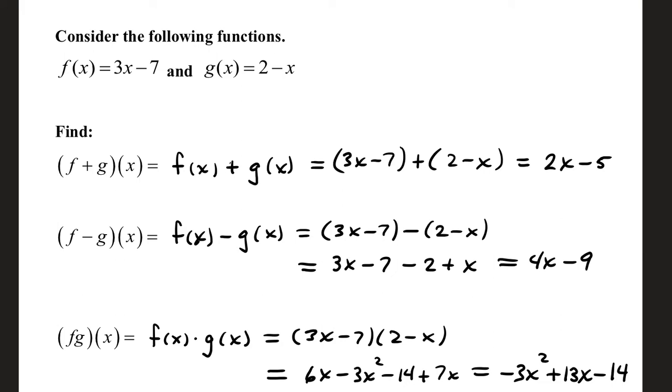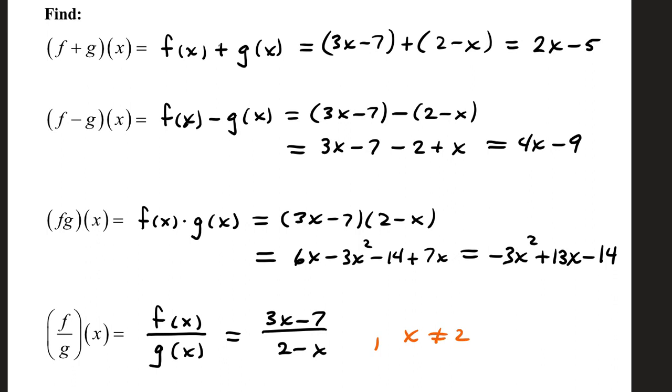With subtraction you have to be a little more careful. That one you have function f minus function g. If function g has two or more terms in it, like this one is 2 minus x, then you have function f, 3x minus 7, minus function g, 2 minus x. You will have to be careful to distribute that minus sign if this second function has two or more terms in it. 3x minus 7 minus 2 plus x. Combine like terms once you have cleared the parentheses. That's 4x minus 9.